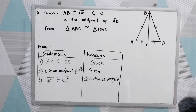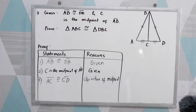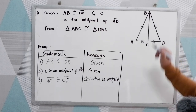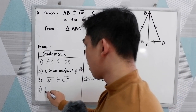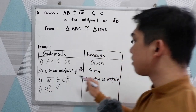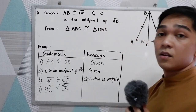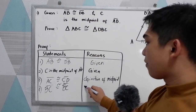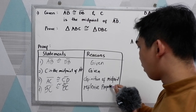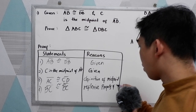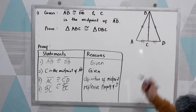Now we have one side and another side. We can say that BC is congruent to BC. That is by the reflexive property of congruence. The reflexive property of congruence states that BC is equal to BC.